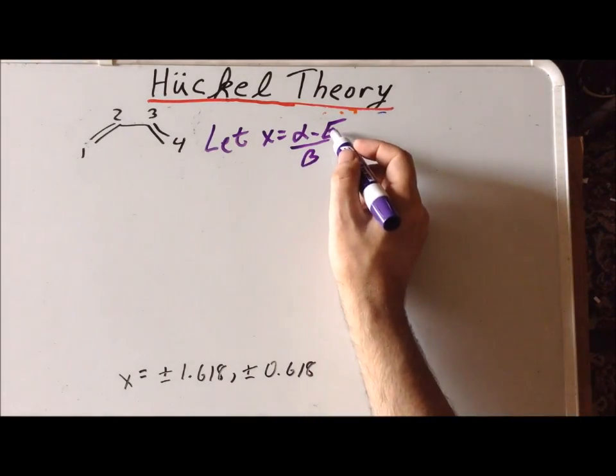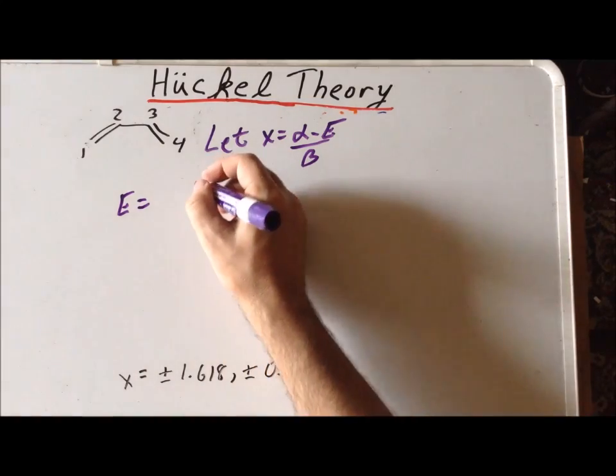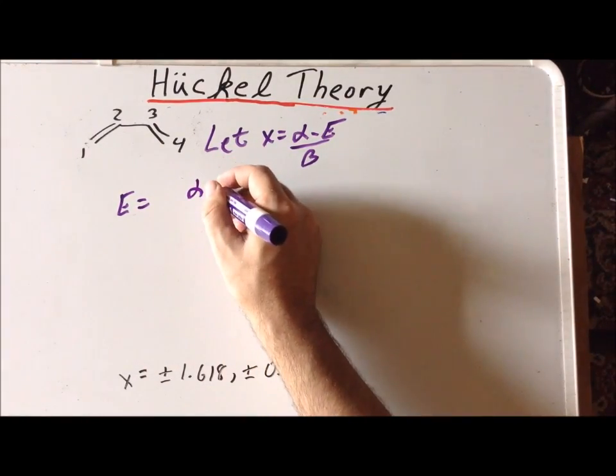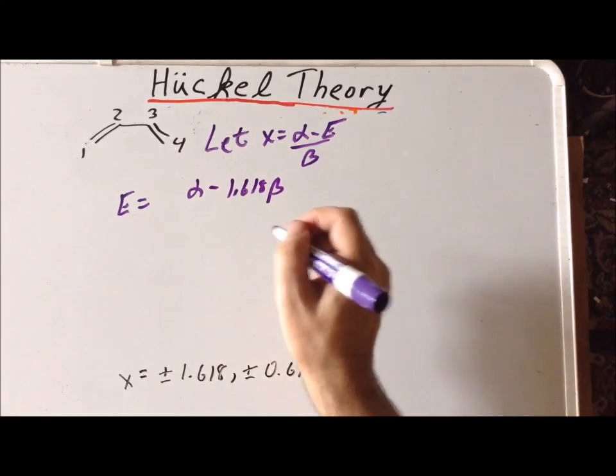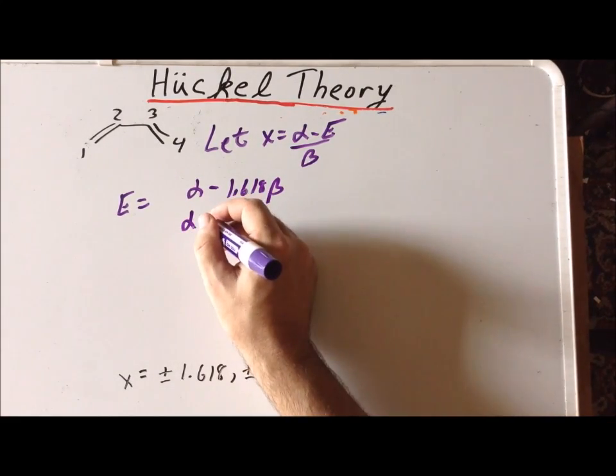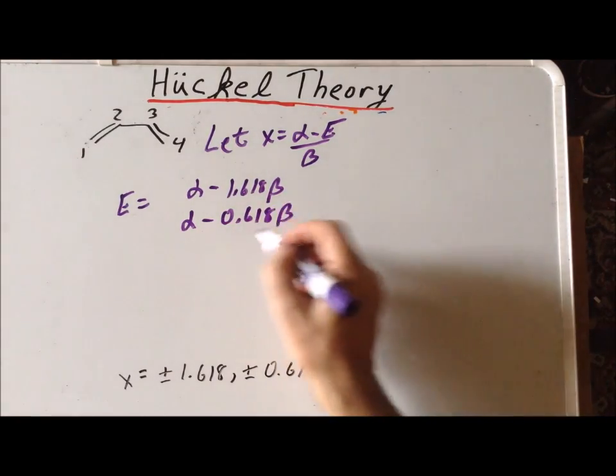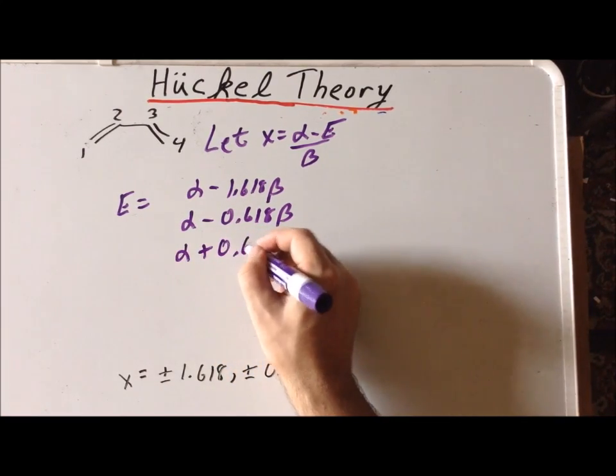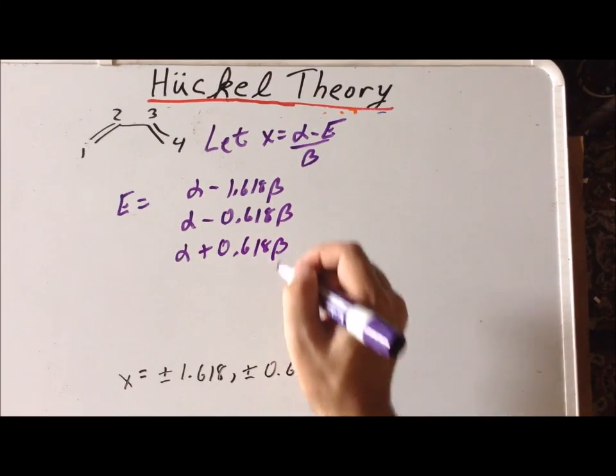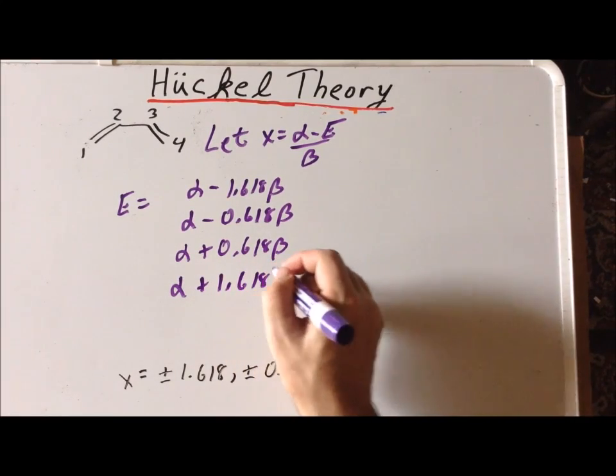Recall our first substitution where we let x equal alpha minus the energy divided by beta. So, now we solve for the energies by back substitution and we get the following results. We get four distinct energies, the highest of which is going to be alpha minus 1.618 times beta, then alpha minus 0.618 beta. These are higher in energy because beta is a negative number. Then we have alpha plus 0.618 beta, and then the lowest possible is alpha plus 1.618 beta.